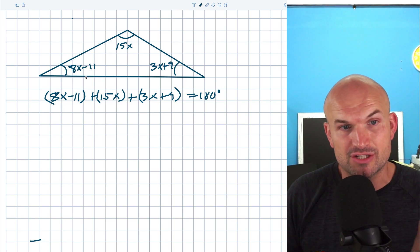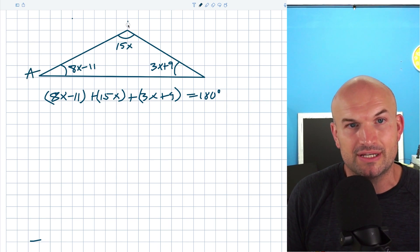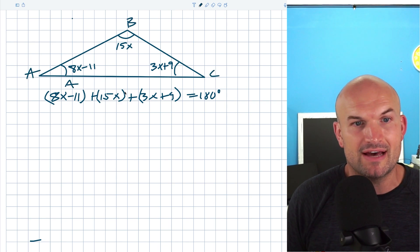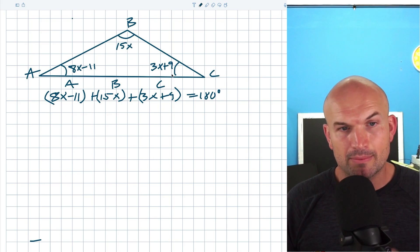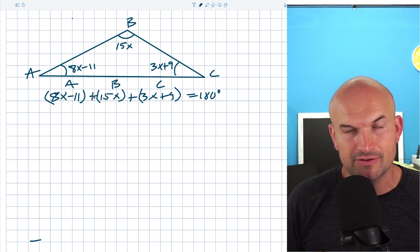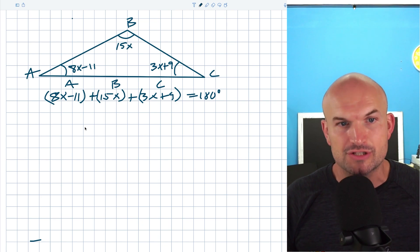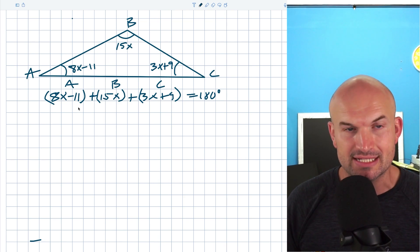We don't really need the parentheses, but I just want you to recognize here, if I was to label these A, B, and C, notice how I have A, B, and C. I just want to make sure you're keeping everything organized. The parentheses are only grouping our angles together, they're not for any other reason for operations or anything like that.